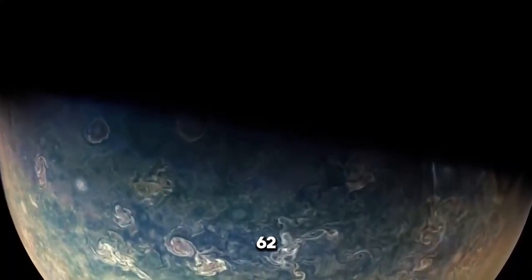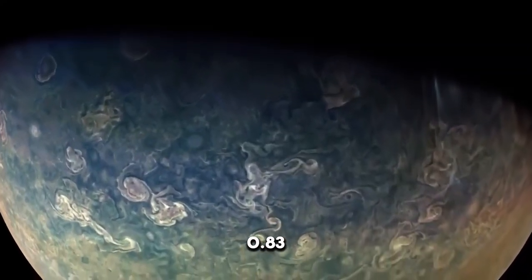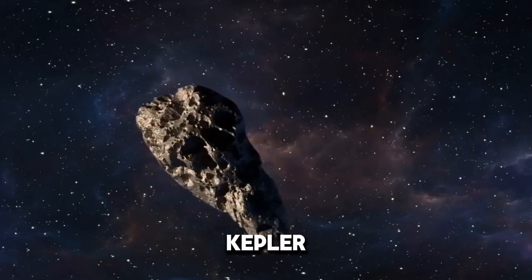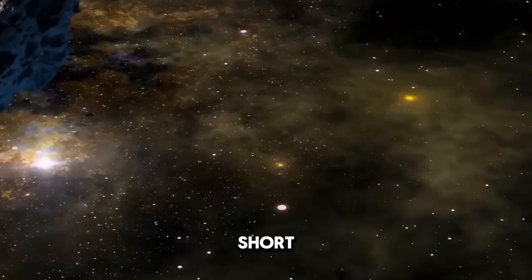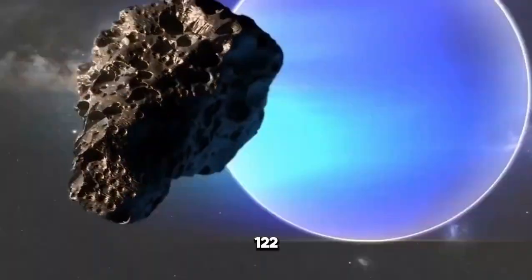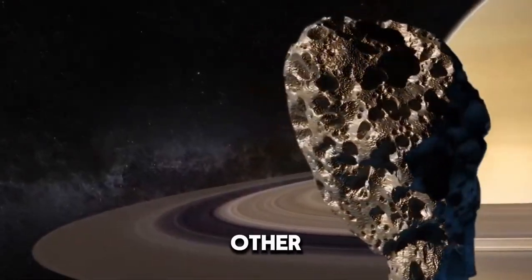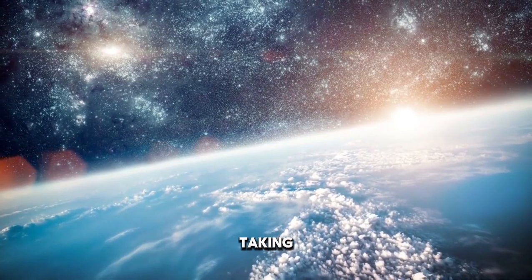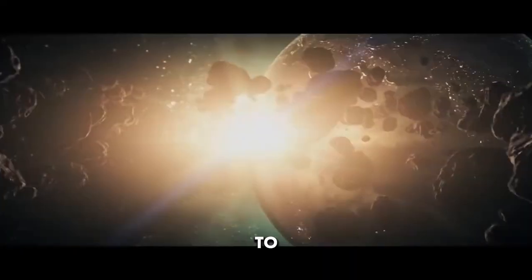Kepler-62e scored 0.83, while Kepler-62f got a score of 0.69, which is a pretty good match. Kepler-62e completes a short trip around its star every 122 days. On the other hand, Kepler-62f prefers a slower orbit, taking 267 days to complete its journey.